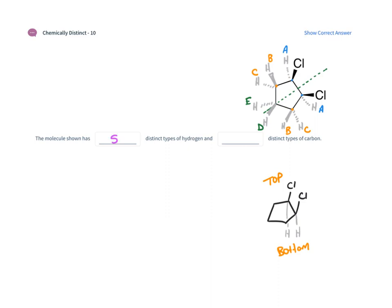When we go to the carbon, it actually becomes simpler because you don't have carbons above and below the ring — just the carbons that are part of the ring. Redrawing this with the plane of symmetry, we just need to go through and identify the carbons. Here's one type, mirrored on the other side of the plane. Here's the next type, which is mirrored. And the third type is down here at the bottom. So we have three distinct types of carbon.